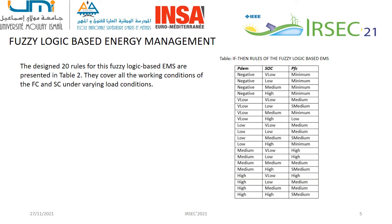We have 20 rules presented in Table 2, and they cover all the working conditions of the fuel cell, state of charge, and supercapacitor under varying load conditions. For example, the first four rules show the power provided by the fuel cell and supercapacitor under negative load conditions.